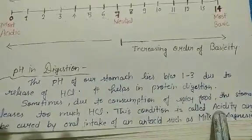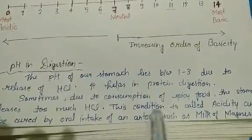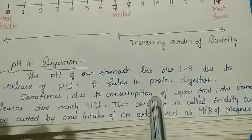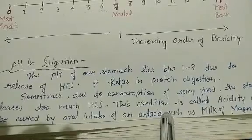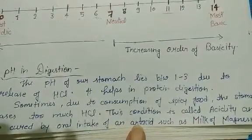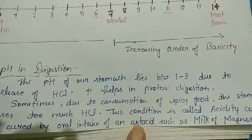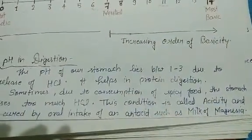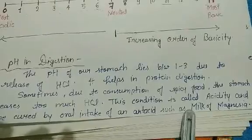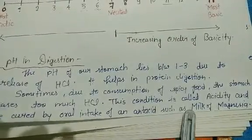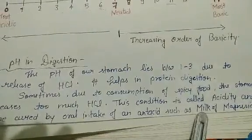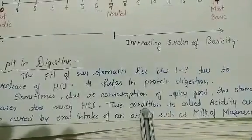The condition of acidity can be cured easily with the help of an antacid. Antacids are substances that neutralize the effect of an acid; they can be any mild base fit for oral consumption. One example of an antacid is milk of magnesia — magnesium hydroxide with the formula Mg(OH)₂ — whose suspension in water is taken for relief from acidity.